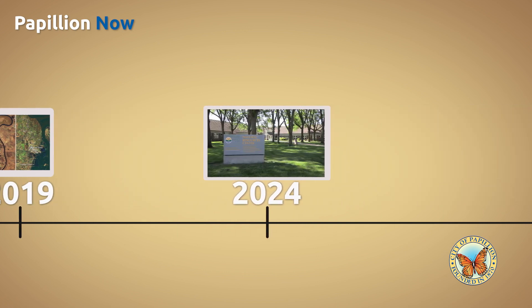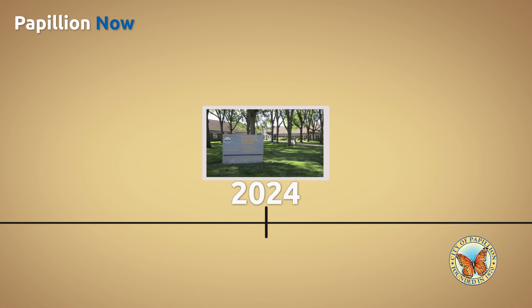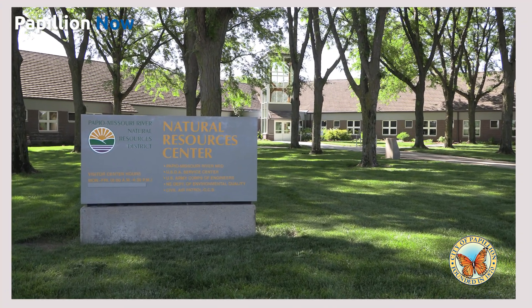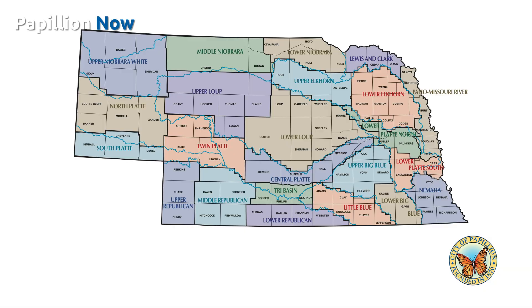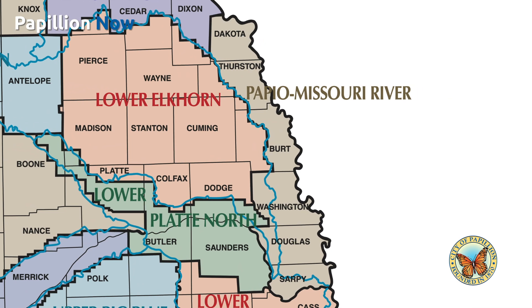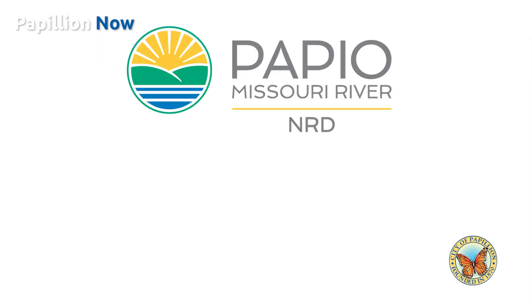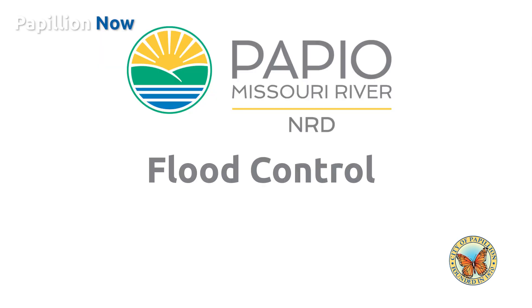To gain more knowledge on how the system works, we talked to the general manager of the Papillion Natural Resource District. I'm John Winkler, the general manager of the Papillion-Missouri River Natural Resource District. We cover a six-county area in northeastern Nebraska, all the way from the confluence of the Platte and Missouri rivers up to South Sioux City. We're responsible for flood control,